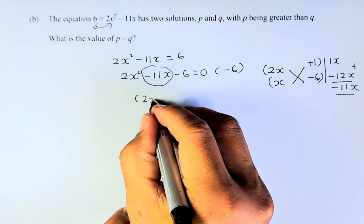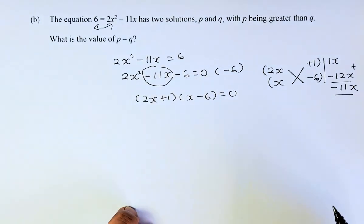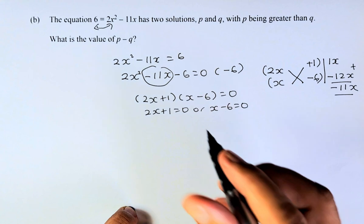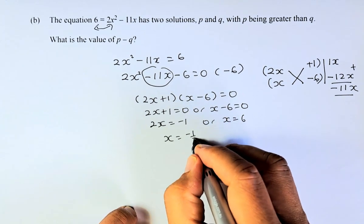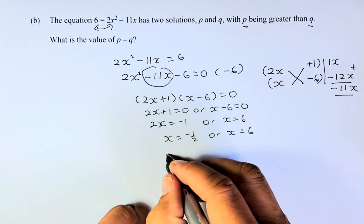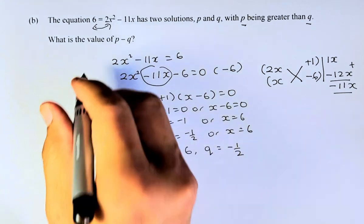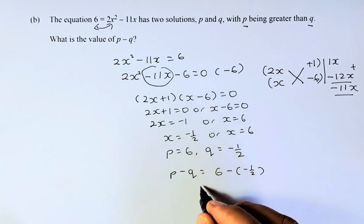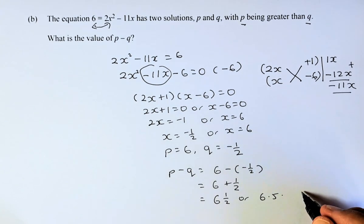So you're going to put 2x plus 1 and x minus 6 equal to 0. Now you're going to solve: 2x plus 1 equals 0, or x minus 6 equals 0. So 2x equals negative 1, or x equals 6. Simplifying: x equals negative one-half, or x equals 6. So there are two solutions. Since p must be greater than q, p has to be 6 and q, the smaller one, has to be minus one-half. And the last part asks: what is the value of p minus q? So p minus q equals 6 minus negative one-half, which is 6 plus one-half. And the answer is going to be 6.5.